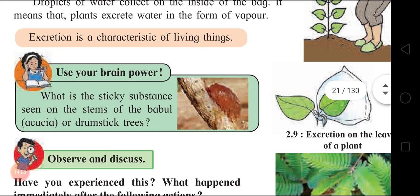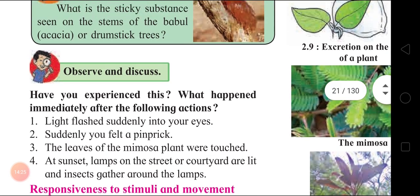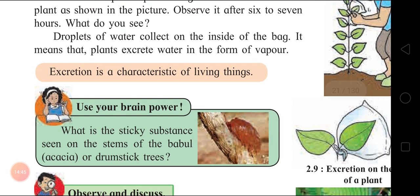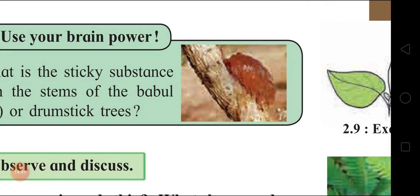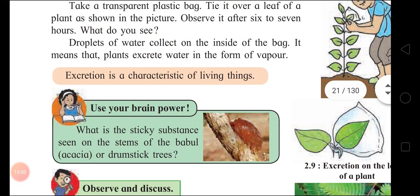Use your brain power: what is the sticky substance seen on the stem of the bottle gourd or drumstick trees? This is also a part of the eliminated product - it is the plant's waste. Excretory organs: specialized organs present in the animals for excretion are called excretory organs. In plants, the waste substances are stored in the leaves and then shed along with leaves, or sometimes through the barks of the trees. Plants also secrete excess water in the form of water vapor. So excretion is the characteristic of living things.